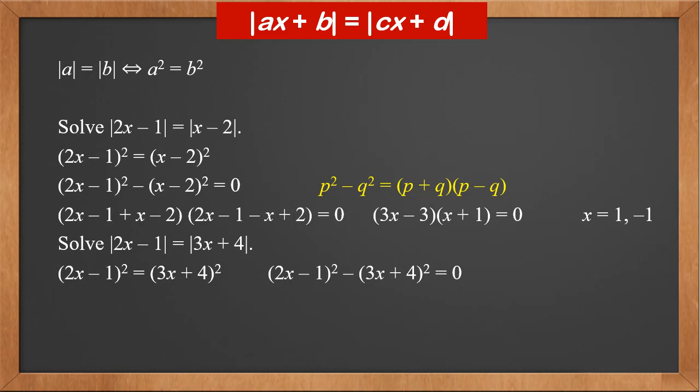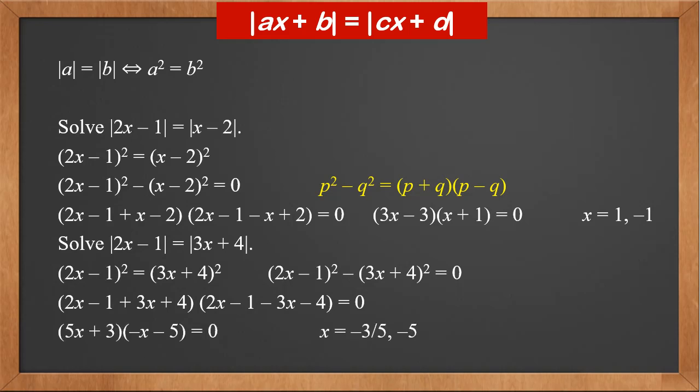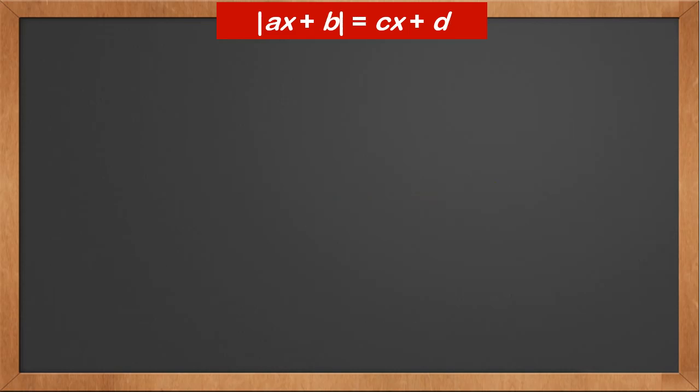Rewrite as two x minus one squared minus three x plus four squared equals zero. Factorize into two x minus one plus three x plus four, times two x minus one minus three x minus four. This gives five x plus three times minus x minus five equals zero. Therefore, x is either minus three over five or minus five.